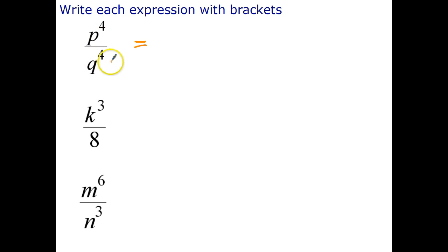So first off because they're both raised to the power of 4, index law number 5 in reverse can be p over q all to the power of 4. I'll write that a bit more neatly: p over q all to the power of 4.